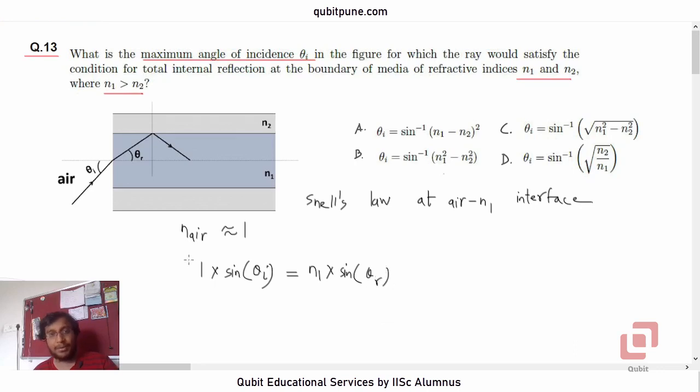We generally remember it as n1 sine theta equals n2 sine theta_r, but here remember n1 in the problem's context is actually one because that is air and the second medium has refractive index n1. So we have sine of theta_i equals n1 sine of theta_r. Remember we want to find maximum angle of incidence theta_i.